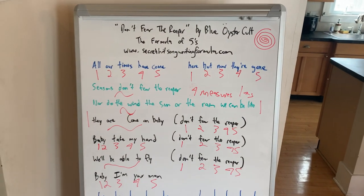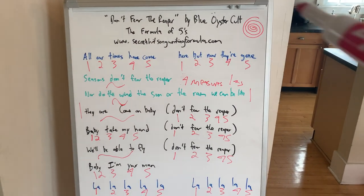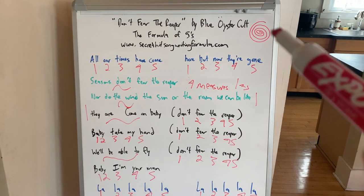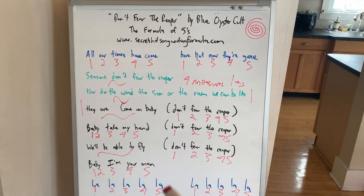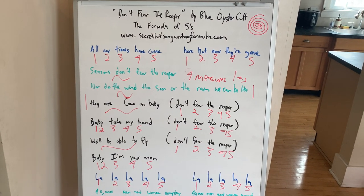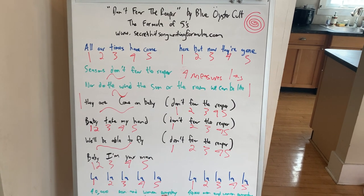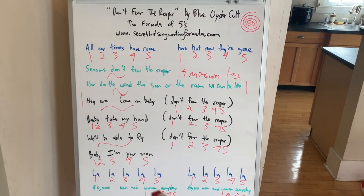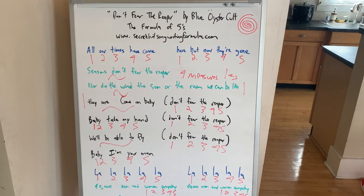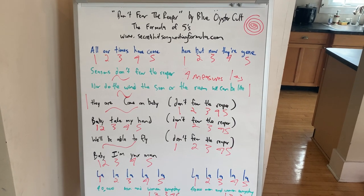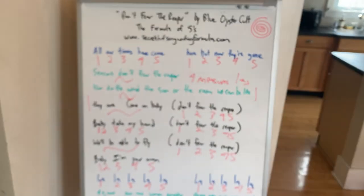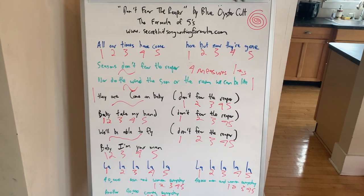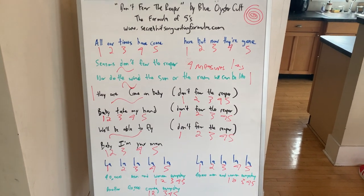So, there we have it. Don't Fear the Reaper follows the formula of fives. That is to say, each significant song section follows a five-note rhythmic hook, and that is the secret of self-similarity that makes this song stand the test of time and makes it so catchy to sing, among other factors like a great chord progression and great riff and other things we talk about in the book. But we're just talking about the fives part of the formula here.